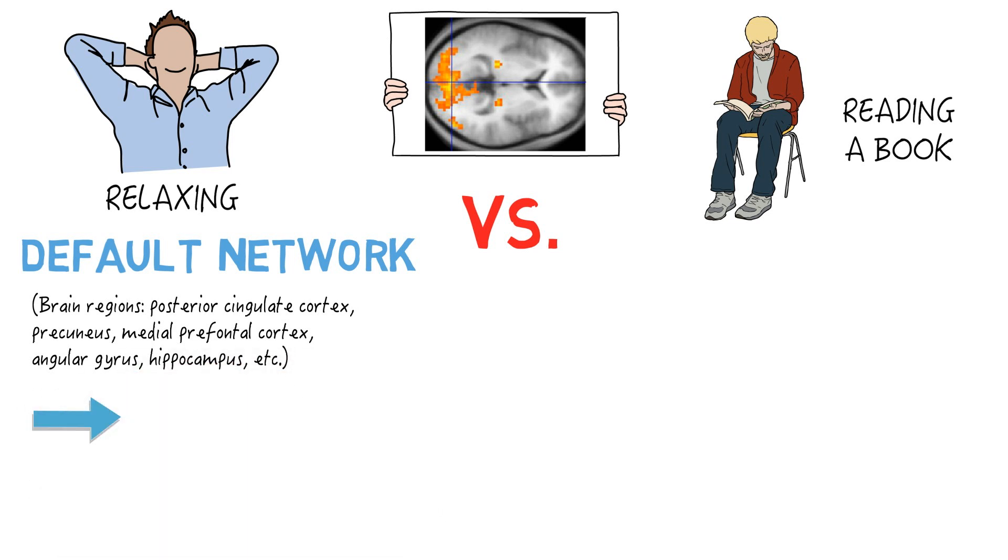Indeed, the default network is responsible for mind wandering, which tends to be thinking about yourself, thinking about others, thinking about memories, and thinking about the future.